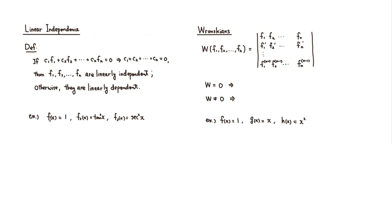Let's look at the linear independence of more than two functions. Here's the definition: if c1·f1 + c2·f2 + ... + cn·fn = 0 implies that all coefficients c1, c2, ..., cn are all equal to 0, then f1, f2, ..., fn are linearly independent. Otherwise, they are linearly dependent.